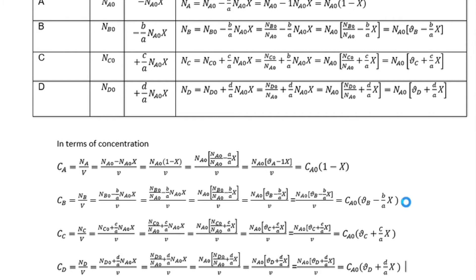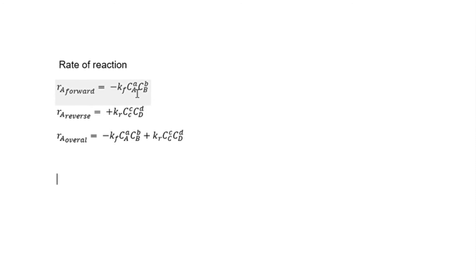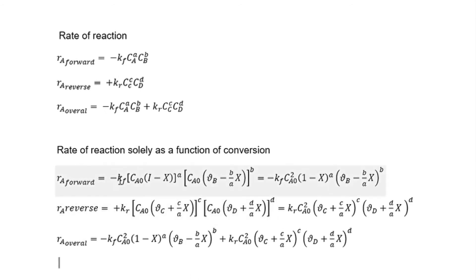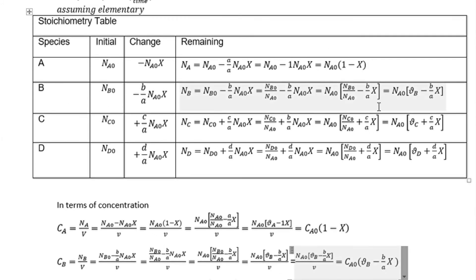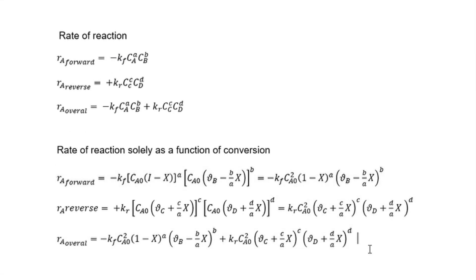Now let us write the reaction rate laws for forward, reverse, and overall. The reaction law can be expressed in this format. The forward rate has a negative sign because reactants are being consumed; the reverse has a positive sign because products are being consumed; and the overall reaction is expressed accordingly. We used the stoichiometric coefficients as the exponents because this reaction is elementary. We then substituted C_A, C_B, C_C, and C_D — everything we derived — back into our final equation, expressing the reaction rate law solely as a function of conversion.